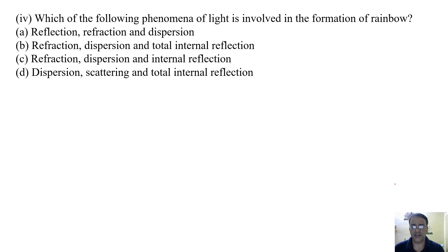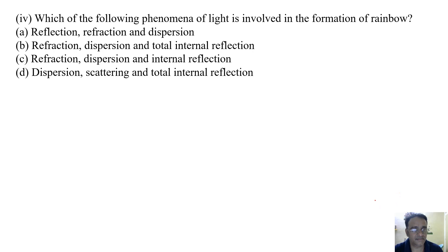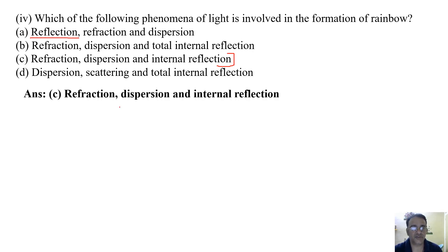Question number four: which of the following phenomena of light is involved in the formation of a rainbow? Options include reflection; refraction, dispersion and total internal reflection; refraction, dispersion and internal reflection; or scattering and total internal reflection. The correct answer is option C — refraction, dispersion and internal reflection.